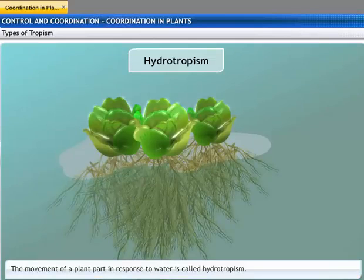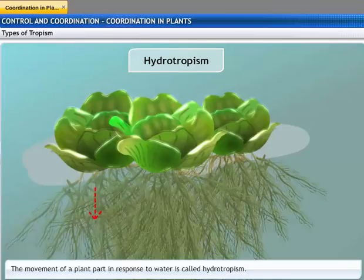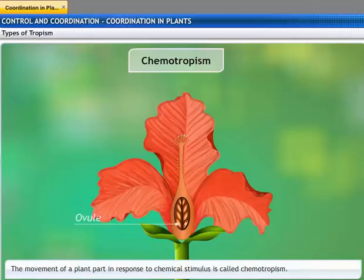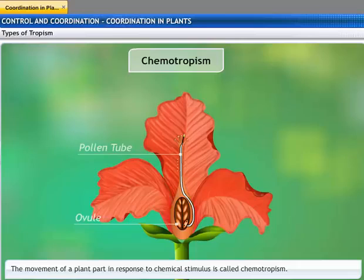Hydrotropism is another growth response in which the direction is determined by the stimulus of water. Chemotropism is movement caused by a chemical stimulus. The growth of pollen tubes towards ovules is an example of this type of tropism.